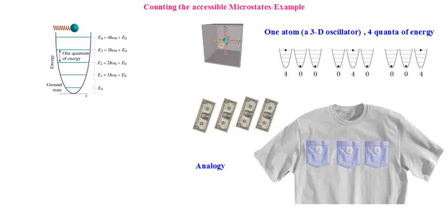Let's discuss more examples of counting the accessible microstates of a system. Here we take a realistic example — that of a single atom. Remember, these are oversimplified examples of the actual system. A thermodynamic system always consists of particles of the order of Avogadro's number, but these are toy models. The only reason we take up these unrealistic examples is because we can do a direct counting of microstates only in such simple cases.